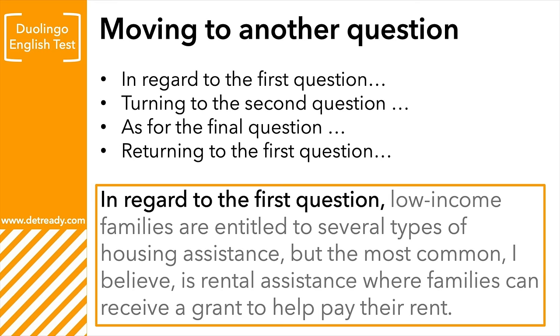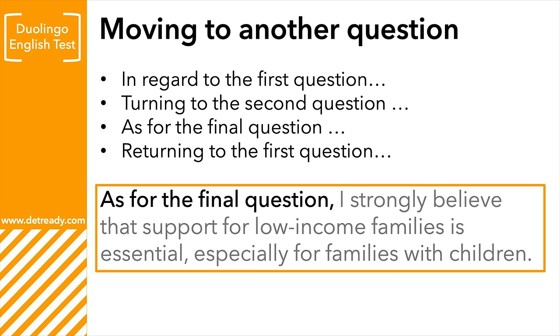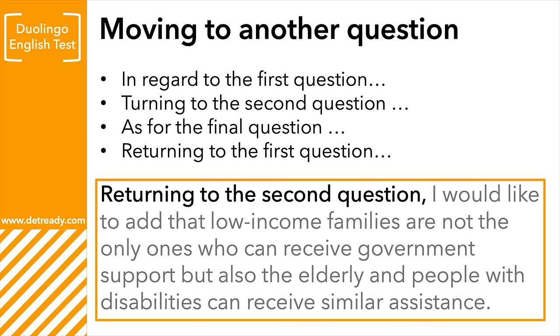Here's a full example: 'In regard to the first question, low-income families are entitled to several types of housing assistance, but the most common, I believe, is rental assistance, where families can receive a grant to help pay their rent. As for the final question, I strongly believe that support for low-income families is essential, especially for families with children. Returning to the second question, I would like to add that low-income families are not the only ones who can receive government support, but also the elderly and people with disabilities can receive similar assistance.' These transitional phrases make your answers sound a lot more logical.